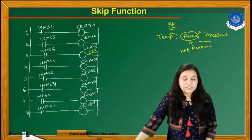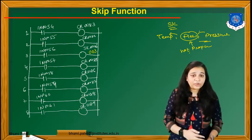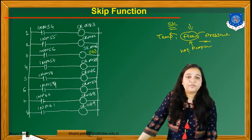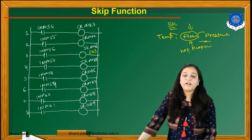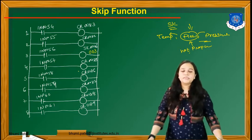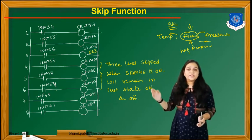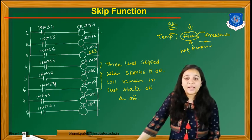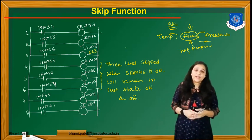Whenever we write the skip command, it will skip that particular line in the program for some time. Suppose we use the skip function for the flow controller. We write SK0046 with the number 003 — that means after the third rung executes, the fourth, fifth, and sixth rungs will be skipped. When SK0046 is on, the coil remains in its last state — on or off. Whenever there is a problem in the flow controller, we can skip those lines, repair the flow controller, and then execute the same program again.